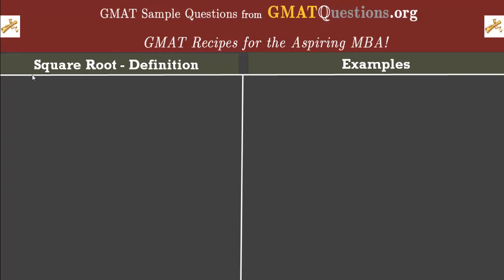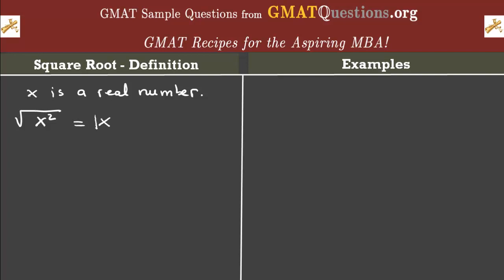So if you're given a real number x, then we say that the square root of x squared is equal to the absolute value of x. This is a mathematical definition.